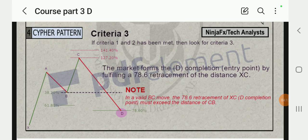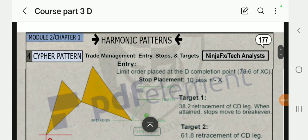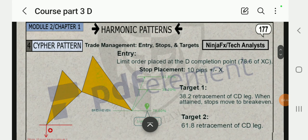In a valid BC move, the 78.6 retracement of XC D completion point must exceed the CB leg. So it went back to 78.6 retracement. This is what they mean: it must exceed the CB leg. You get the idea guys.